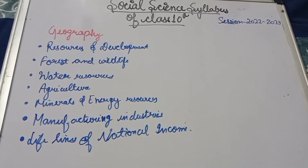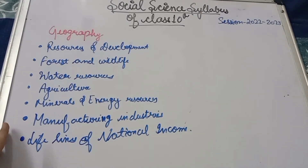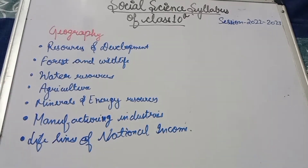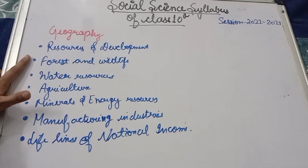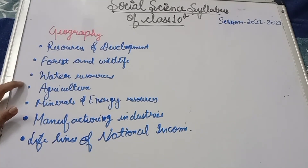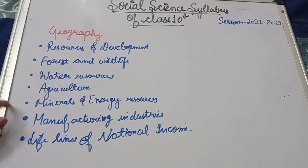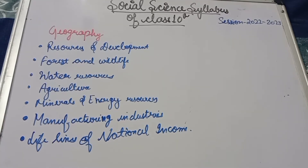This is your geography syllabus. In geography, you have to write down all the chapters. The chapters are: Resources and Development, Forest and Wildlife, Water Resources, Agriculture, Minerals and Energy Resources, Manufacturing Industries, and Lifelines of National Economy. Take a screenshot of this or mark it in your book.